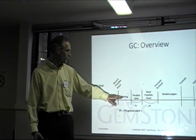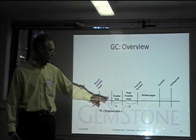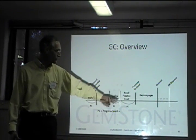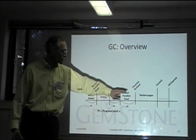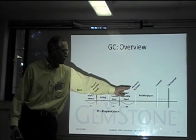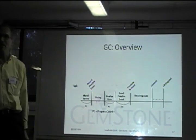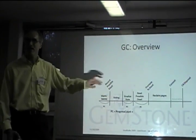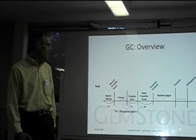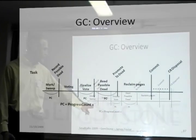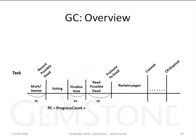Here's a picture of the process: mark, sweep, voting, finalize voting, read possible dead, promote to dead, reclaim, commit — the various steps in the process. There are statistics to be monitored for each of those steps.